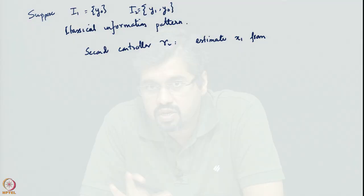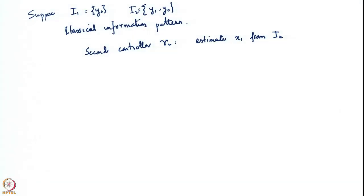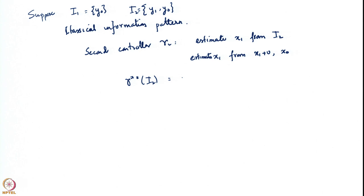But now our information pattern has changed. He is estimating x1 from i2, but i2 has changed to y1 comma y0. So he is estimating x1 from y1, which is x1 plus v, and also y0, which is simply x0. Therefore, γ2* of i2 is the conditional expectation of x1 given x1+v comma x0.